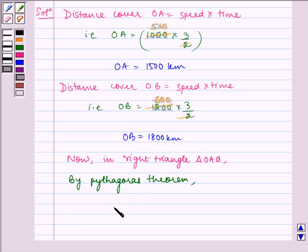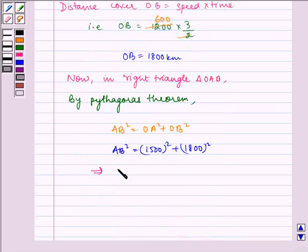We have AB square is equal to OA square plus OB square. AB square is equal to 1500 square plus 1800 square. Which implies AB square is equal to 2250000 plus 3240000.